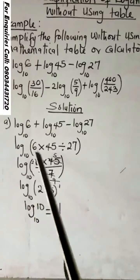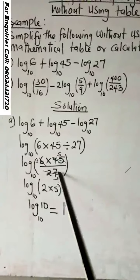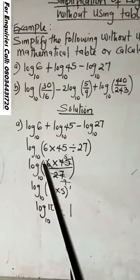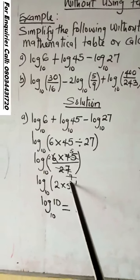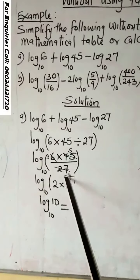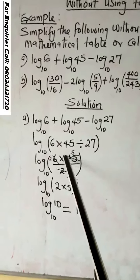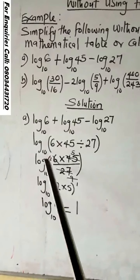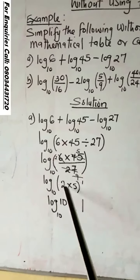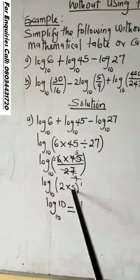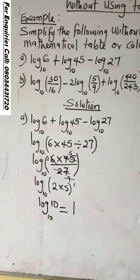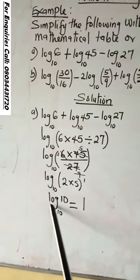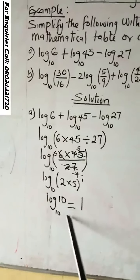It will be 6 times 45 all over 27. 3 and 6 will give you 2. 3 and 27 will give you 9. 9 and 9 will give you 1. 9 and 45 will give you 5. It will remain 2 and 5, which is 2 times 5, which is 10. Remember in our log, log 10 base 10 is 1.